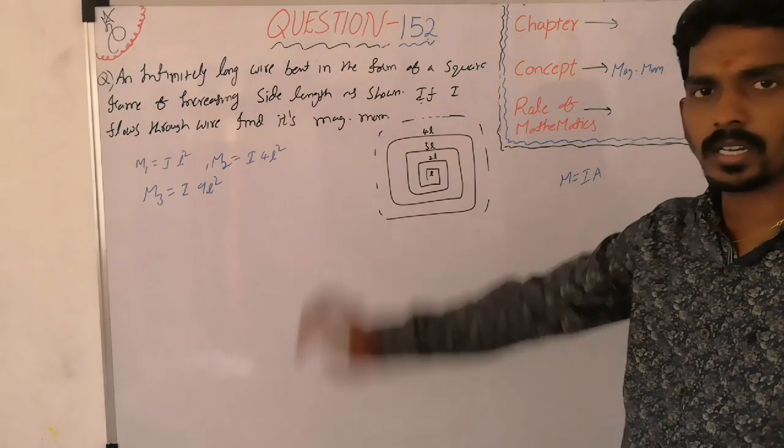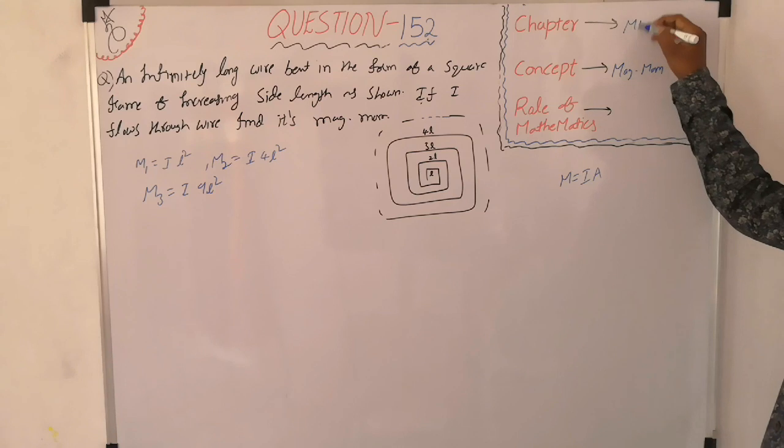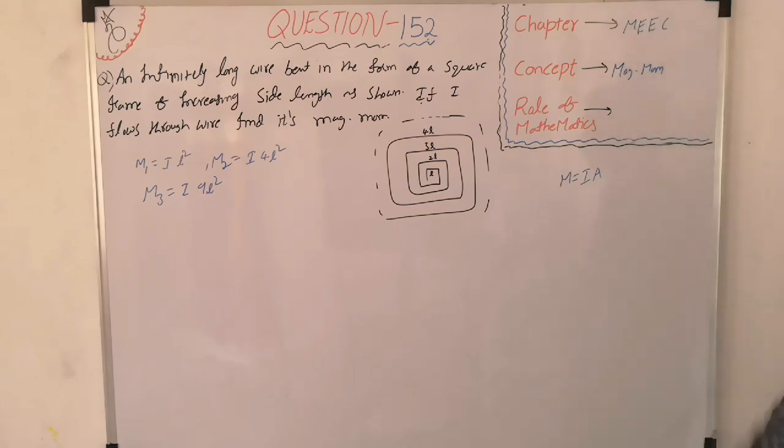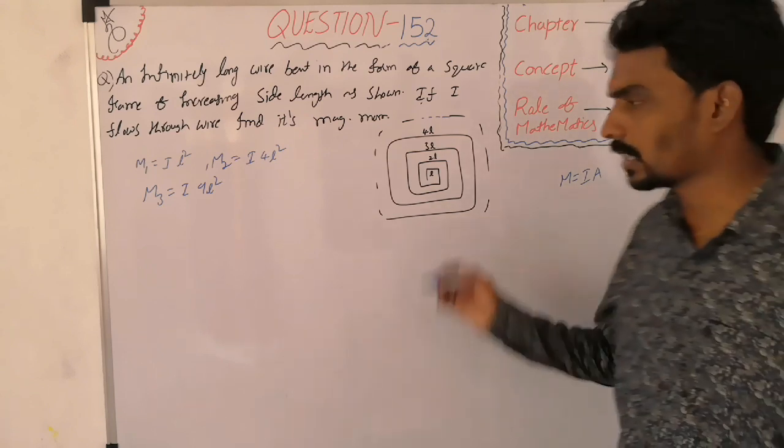Let us discuss one question related to magnetic moment, related to magnetic effects of electric current chapter, where you will use the sum of squares of natural numbers.